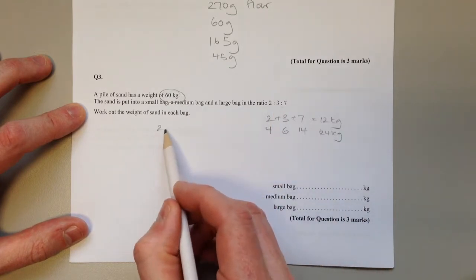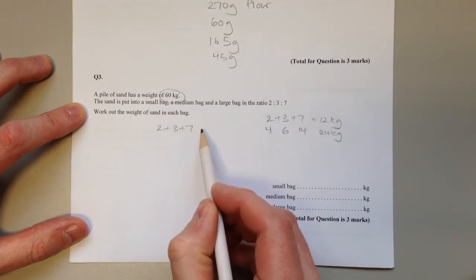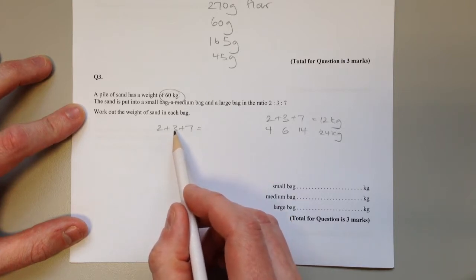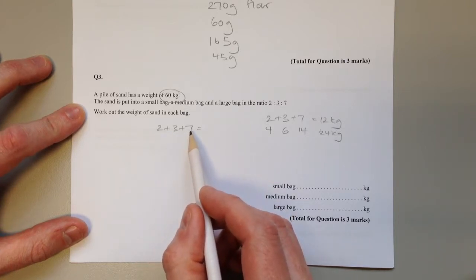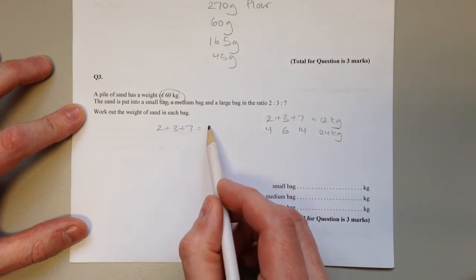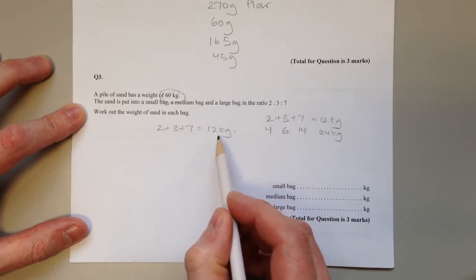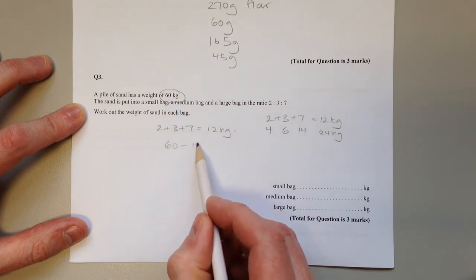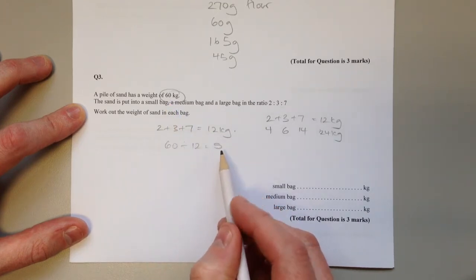But an easier way to share in a ratio is to add together the parts of the ratio. So if we fill one 2 kilogram bag, one 3 kilogram bag, and one 7 kilogram bag, altogether that's 12 kilograms. How many times would we need to do that to share out 60 kilograms? We'd need to do that 5 times.